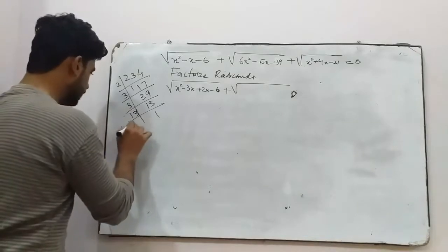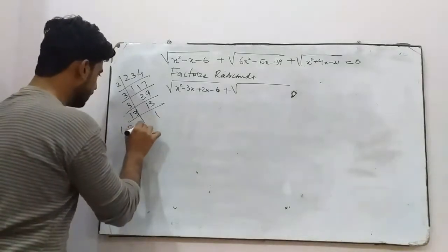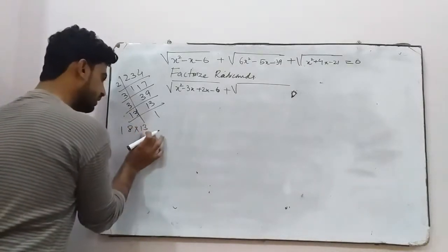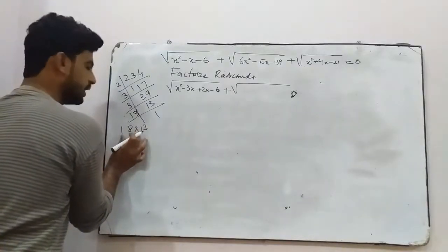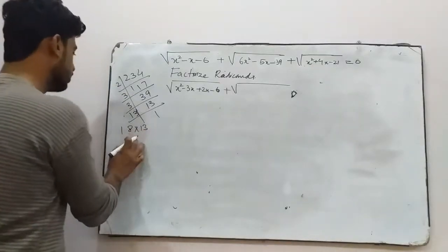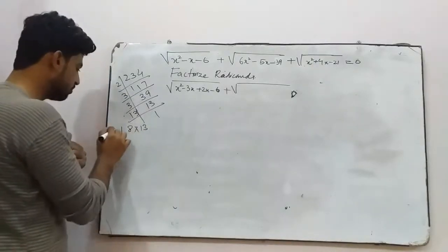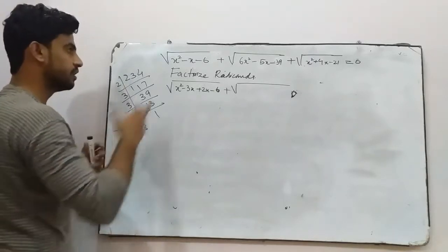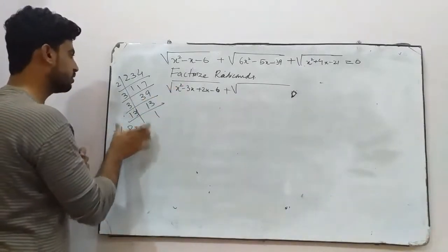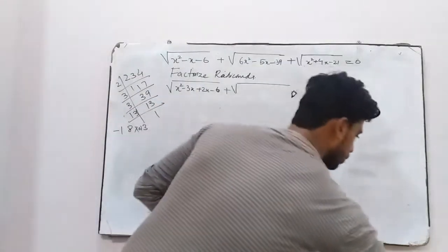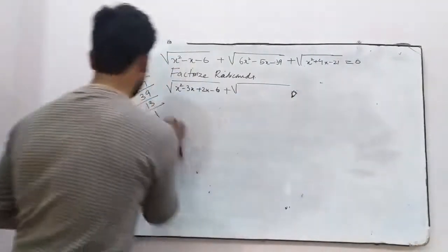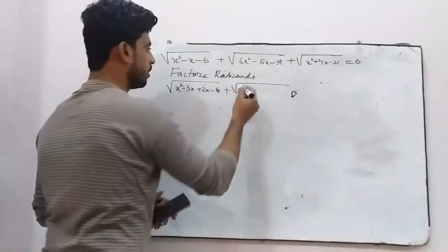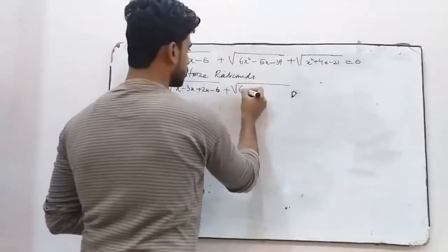By subtracting 13 from 18 we can get 5, or by subtracting 18 from positive 13 we get negative 5. By multiplication we can get 234. So we get 6x².